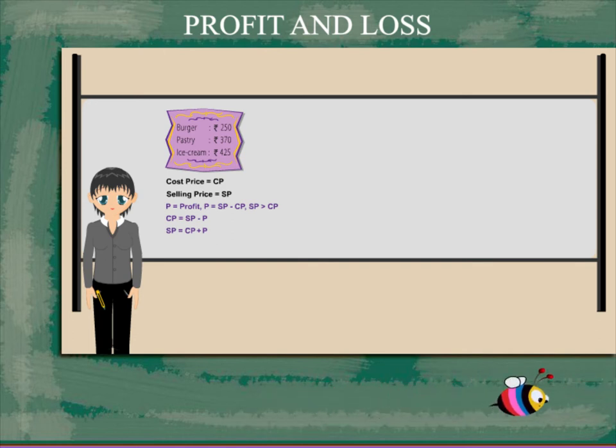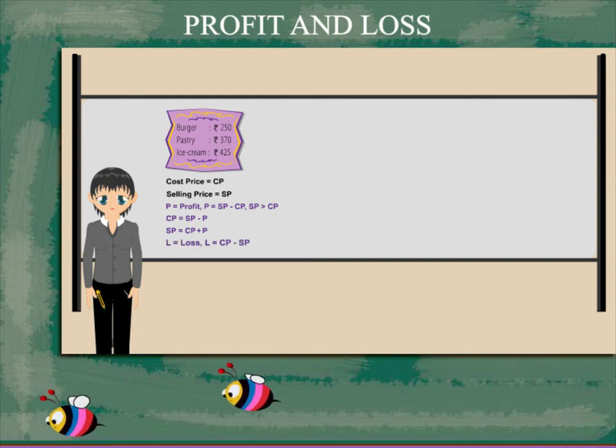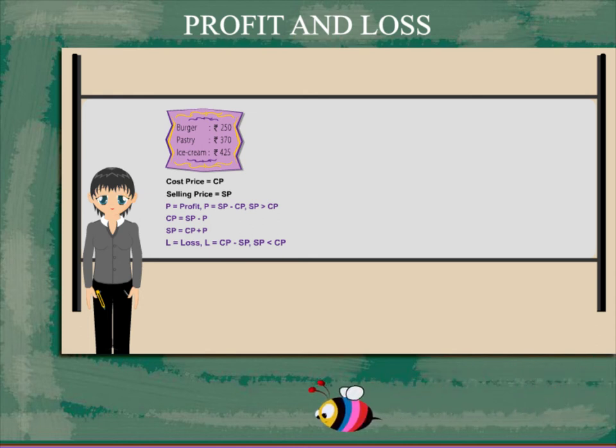Loss is CP minus SP when SP is less than CP. If you add the loss to SP, you get the CP, and if you subtract the loss from the CP, you get the SP.